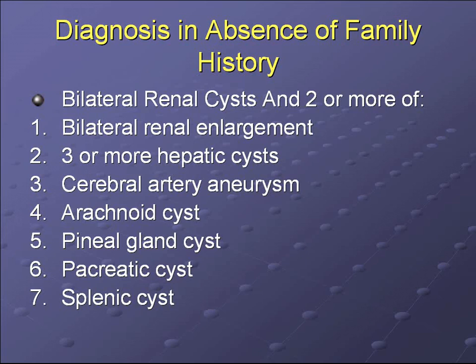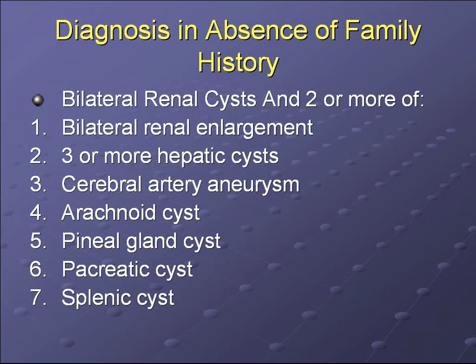In the absence of a family history — about 10% of patients may have a new mutation — the diagnosis requires bilateral renal cysts and two or more of the following: bilateral renal enlargement, three or more hepatic cysts, cerebral artery aneurysms, arachnoid cysts, pineal gland cysts, pancreatic cysts, or splenic cysts.